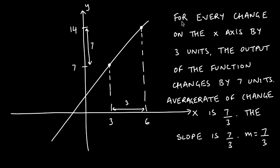For every change on the x-axis by three units, the output of the function changes by seven units. The average rate of change is the change in y over the change in x — seven over three is our average rate of change.